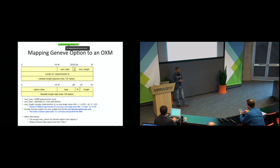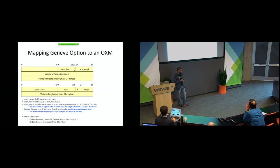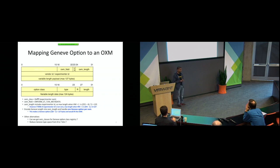Other alternatives could be getting a new OXM class for Geneve from the Geneve option class registry, or reducing the Geneve type space from eight to seven bits. But these are just options. Right now we are still assuming we can go with the experimenter class. This was something Ben suggested - using the MSB of the experimenter ID as all-ones, a non-zero MSB, and that way we can support the 127-byte Geneve option. This is still work in progress and we are figuring out the best approach.